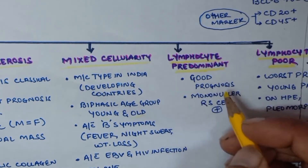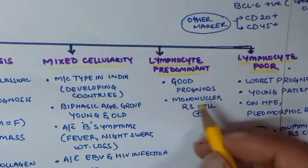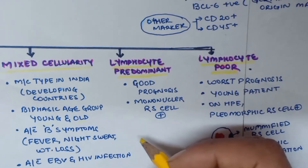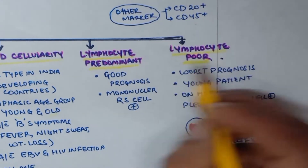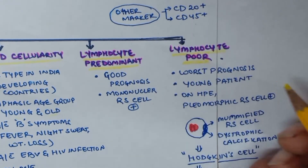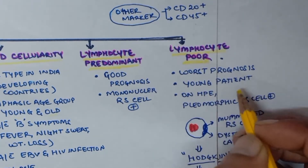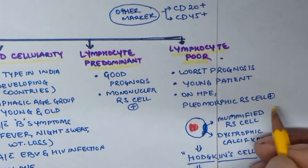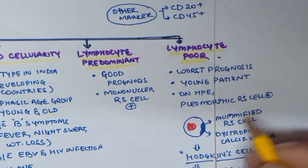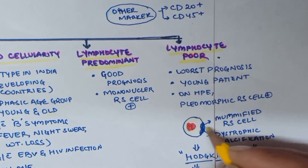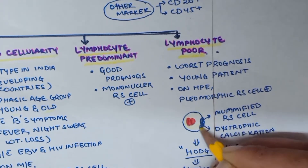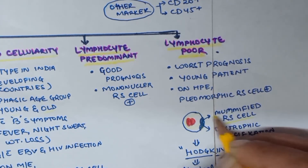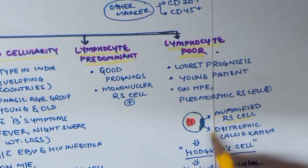Lymphocyte predominant has good prognosis and mononuclear Reed-Sternberg cells are present. Lymphocyte poor has the worst prognosis and mainly affects young patients. On histopathological examination, pleomorphic Reed-Sternberg cells are seen. Dystrophic calcification can also be seen, and once calcification starts the cell is known as a mummified Reed-Sternberg cell, also known as Hodgkin's cell — these are atypical histiocytes.